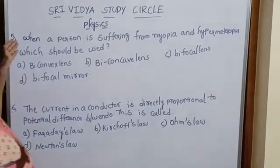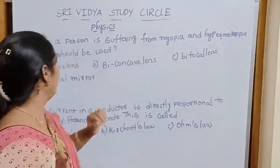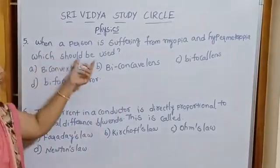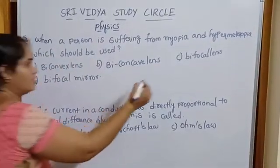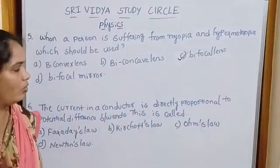Next one. When a person is suffering from myopia and hypermetropia, this should be used. Option is bifocal lens. Why we are selecting bifocal lens?